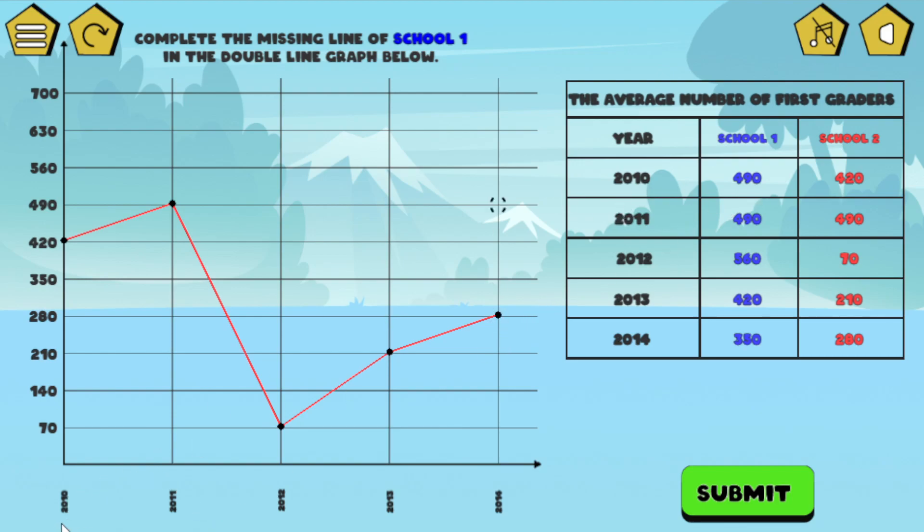So you're going to want to plot the points from left to right. If I click any points here, say 350 here, you can see it's not going to register anything. So you want to get the leftmost one, which would be 2010. Let's go ahead and click 490. And then 2011 is 490. So click that. And you've got the blue line there.